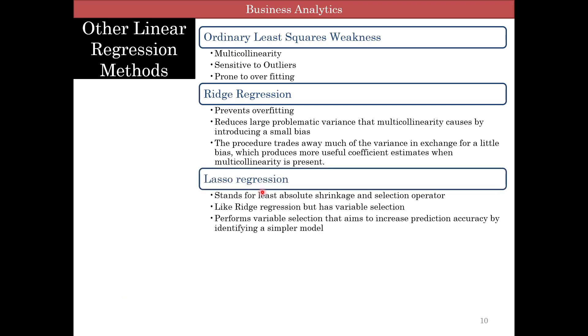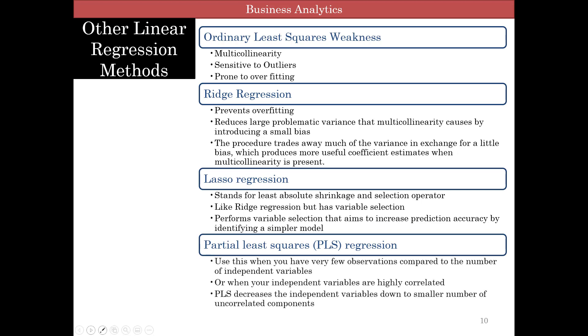LASSO regression stands for least absolute shrinkage and selection operation. It is very much like ridge regression when multi-collinearity but it also has what we call variable selection. So it performs variable selection to increase prediction accuracy and identify a simpler model. So it basically doesn't put all the variables in but actually selects. So basically ridge regression with selection of variables is LASSO regression. And then we come to partial least-squared regression. This is pretty common when you have very few observations compared to the number of independent variables or if your independent variables are highly correlated. Partial least-squared methods decrease the independent variables down to small number of uncorrelated components. So it kind of groups those independent variables together.